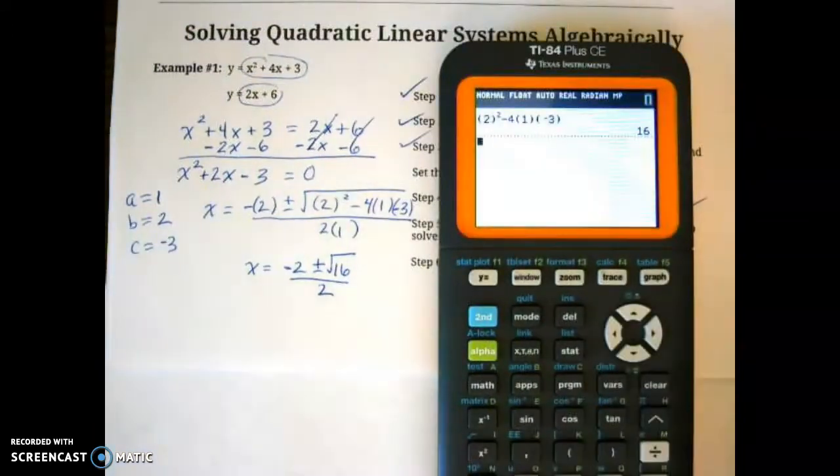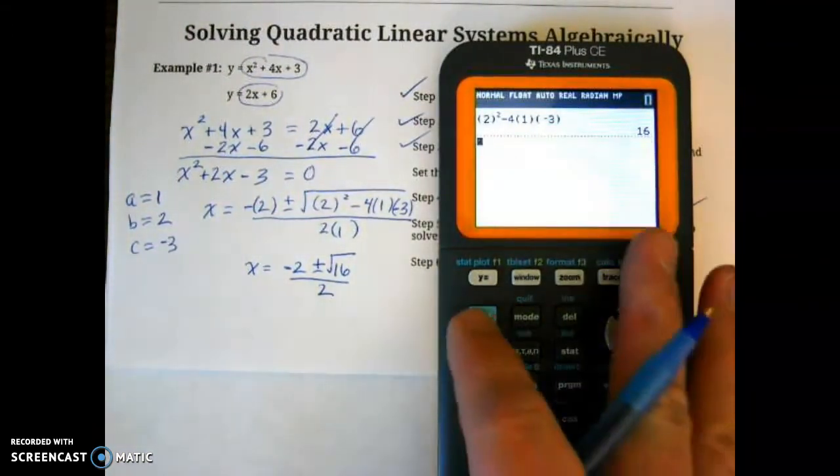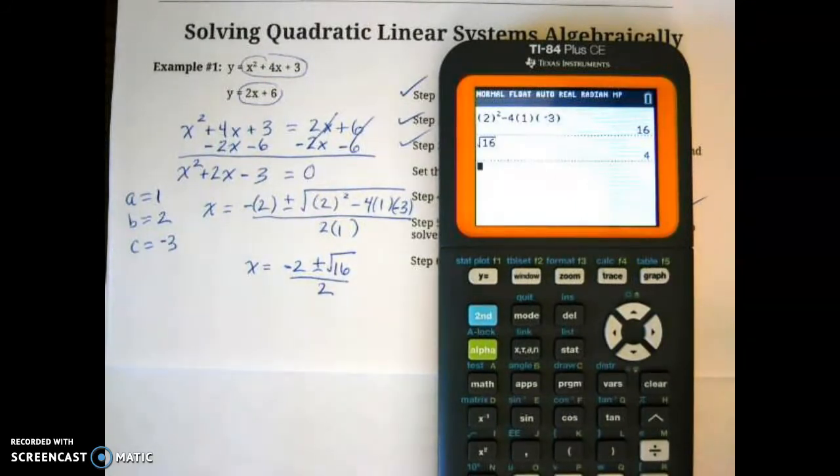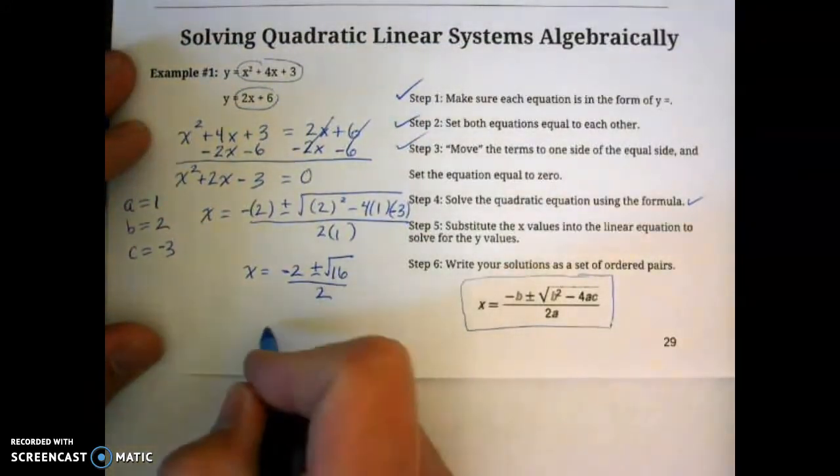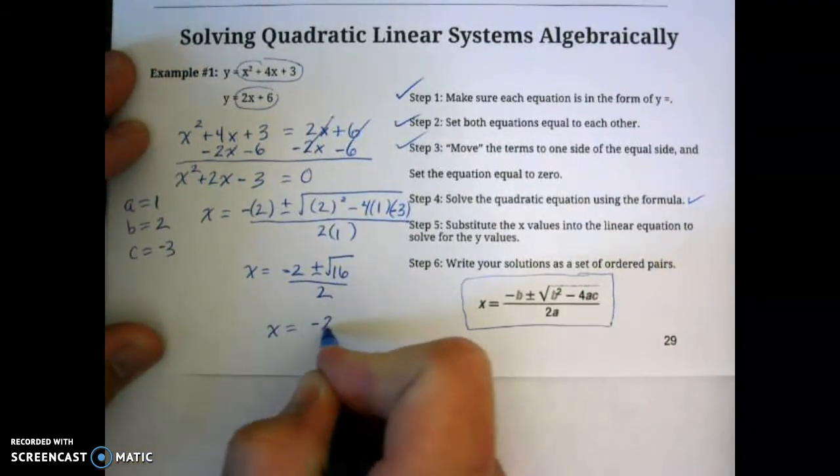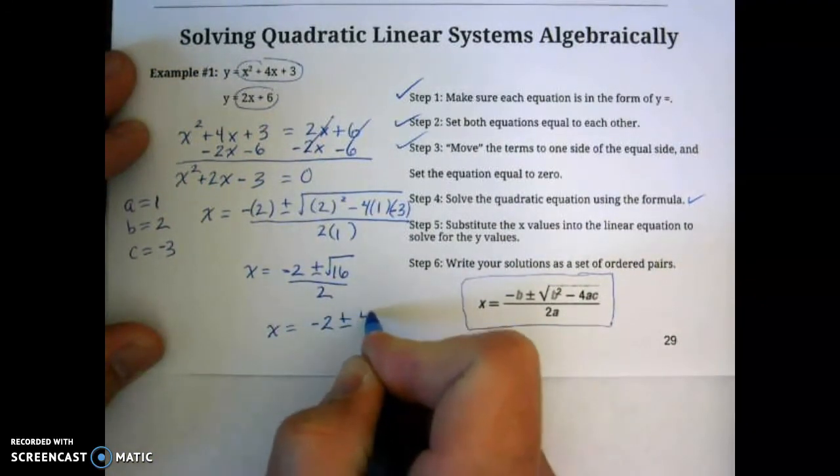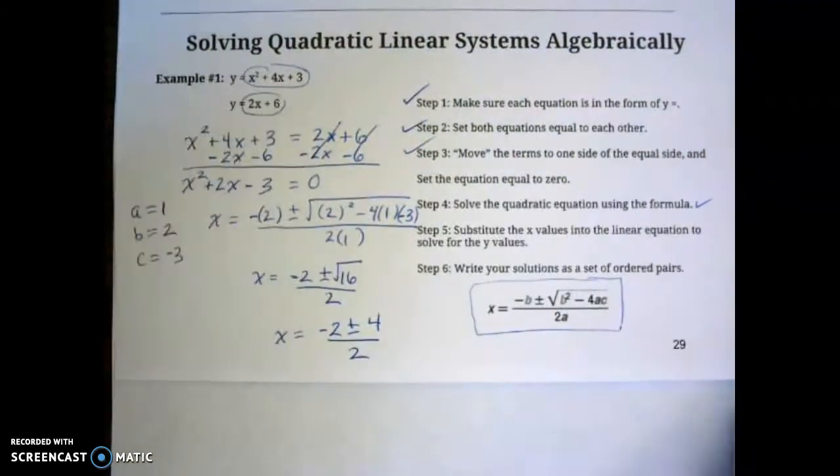Plus or minus the square root of 16 over 2. Now, if you didn't already know, the square root of 16 is actually a perfect square. So we're going to do the square root of 16. It would give you 4. So instead of this square root of 16, we're going to have 4. So I'm going to have x equals negative 2 plus or minus 4 over 2.